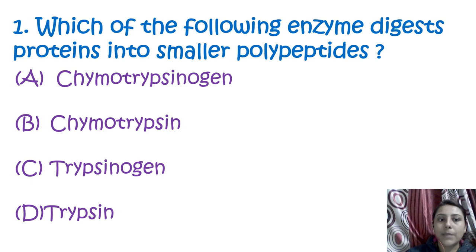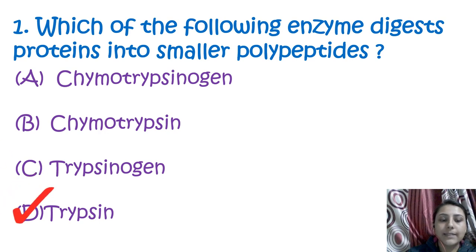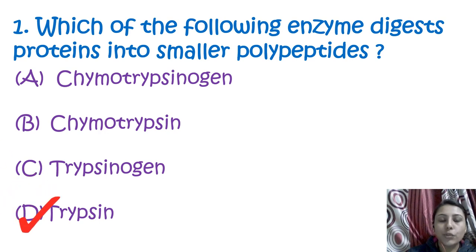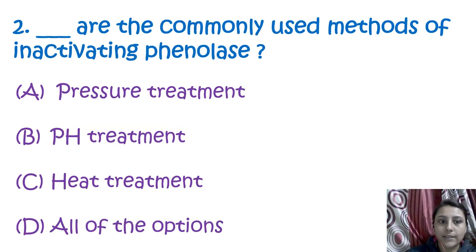The first question is: which of the following enzymes digests protein into smaller polypeptides? That enzyme is trypsin. Trypsin is the enzyme found in the small intestine to break down proteins.